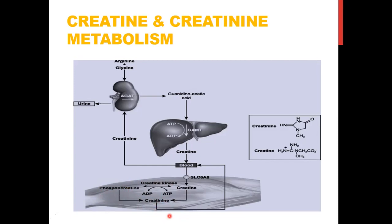Since creatinine is totally excreted by the kidney, any renal disease will elevate its level in the blood. Creatinine is synthesized in the kidney and liver, transported to the muscle where it is stored as creatine phosphate; upon muscle contraction, creatine is converted to creatinine, which is then transported via the blood to the kidney to be excreted. Any renal defect elevates creatinine and makes it a very sensitive marker for renal function.